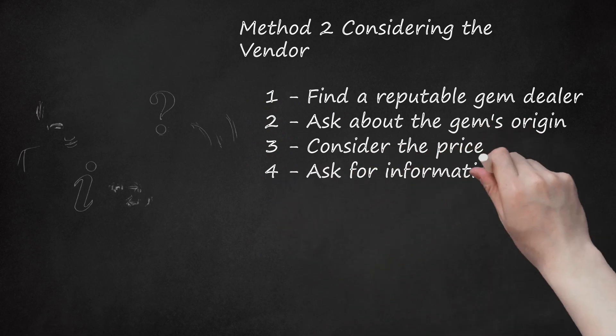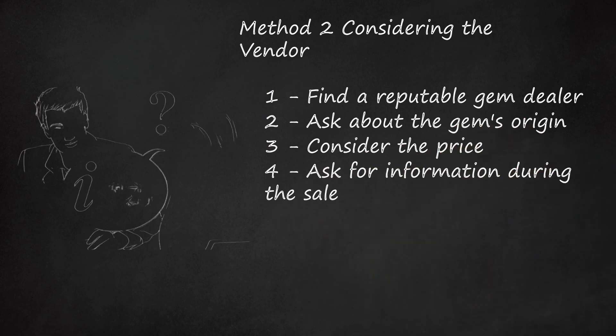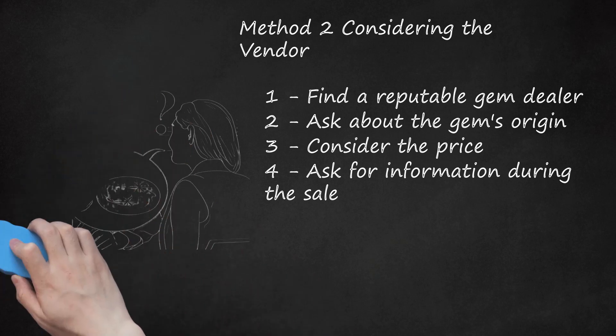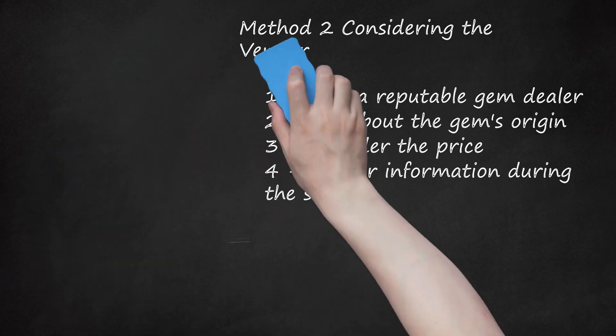4. Ask for information during the sale. When buying amethyst, ask for information about where the gem was mined, how it was cut, and so on. If a jeweler is able to answer these questions with ease, his product is more likely to be authentic. If he seems hesitant to provide too much information, he may be hiding something. It might be a good idea to seek out another seller.